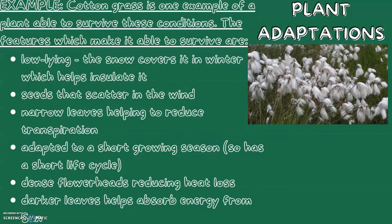Cotton grass is adapted to a short growing season, so it has a short life cycle. It has dense flower heads, reducing heat loss. It also has darker leaves, which help absorb energy from the sun.